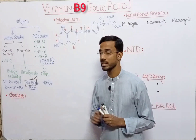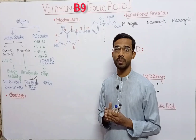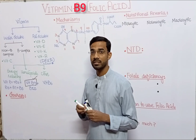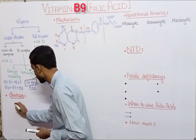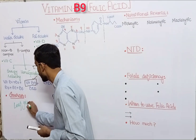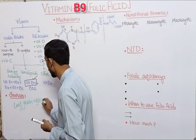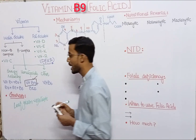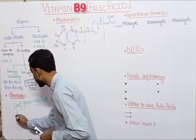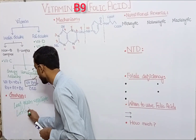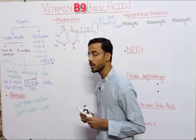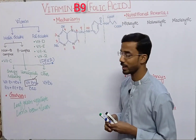First of all we will discuss the sources of vitamin B9. Vitamin B9 is richly present in leafy green vegetables. Vegetables have a lot of vitamin B9. Lima bean and liver also contain a lot of folic acid or vitamin B9.